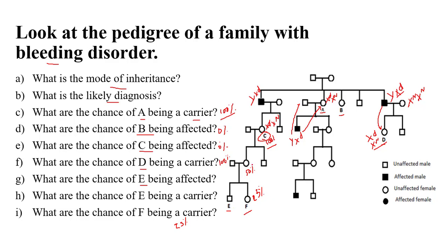Regarding E: similarly, since C — the grandmother of E — is a carrier, there is a 50% chance of passing the abnormal gene to her sons. This son has a 50% chance of being affected, and in the next generation the probability reduces by half again to 25%. So the chance of E being affected is 25%.